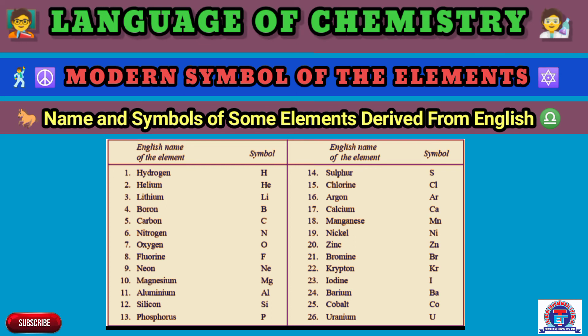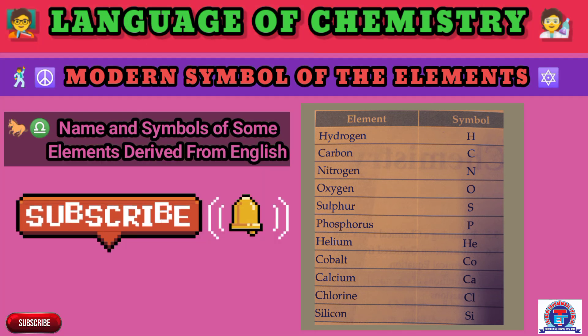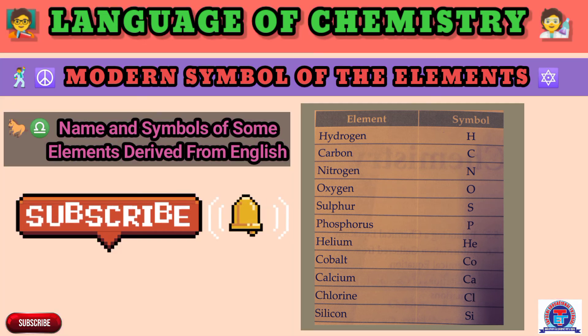Hydrogen symbol H, carbon C, nitrogen N, oxygen O, sulfur S, phosphorus P, helium He, cobalt Co, calcium Ca, chlorine Cl, and silicon Si.